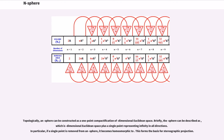Specifically, topologically, an n-sphere can be constructed as a one-point compactification of dimensional Euclidean space. Briefly, the sphere can be described as dimensional Euclidean space plus a single point representing infinity in all directions. In particular, if a single point is removed from an n-sphere, it becomes homeomorphic to dimensional Euclidean space. This forms the basis for stereographic projection.